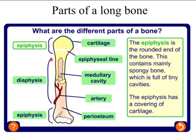The diaphysis is the long shaft of the bone where the major support takes place. In the middle is the medullary cavity, where the yellow bone marrow sits. It has two functions: it stores fat, and it is also involved in making white blood cells.